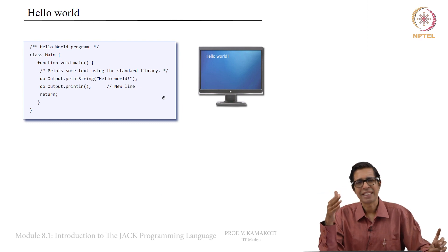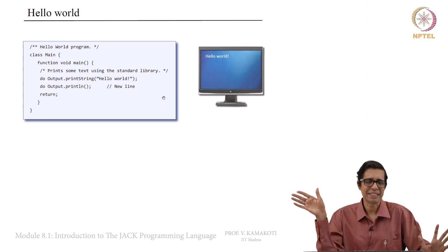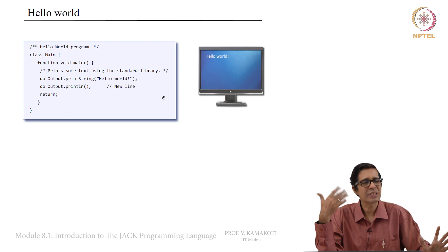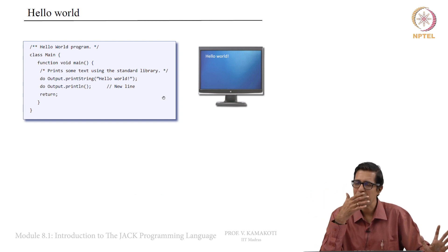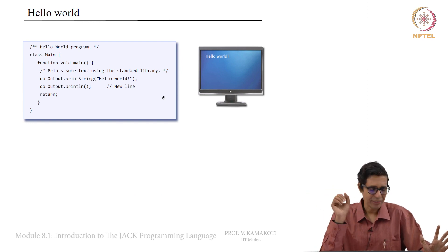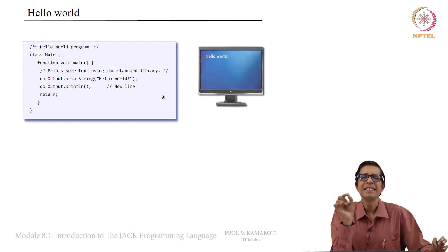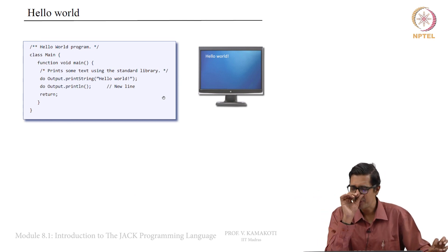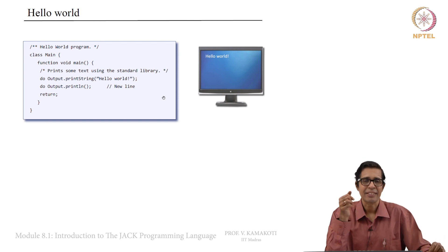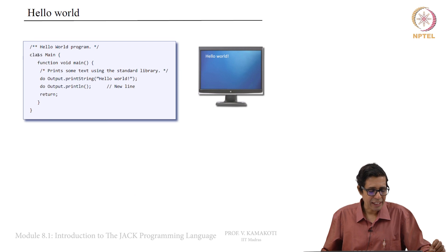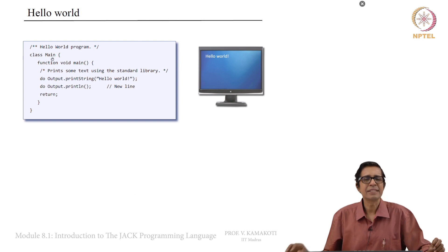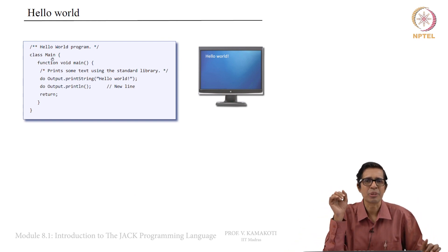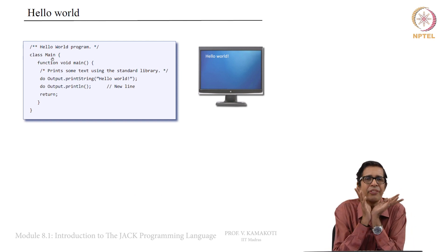If you are familiar with Java or C++, you will understand this lecture very quickly. This lecture is for people who have not studied object-oriented programming languages like C++ or Java but are good in C. As in C, the function main executes first. In JAK there is always a class called Main with a capital M, and inside that class there is a function called small main. Main dot main will always execute first.